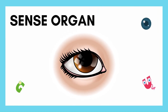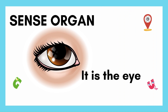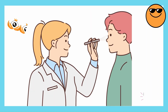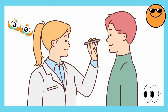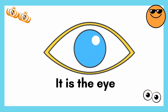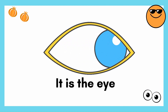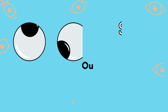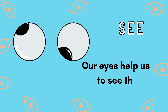Can you identify this sense organ? What organ is responsible for the sense of sight? It is the eye. Our eyes help us to see things around us.